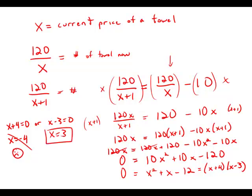That makes sense. And indeed, if the towels cost $3 now, we could buy 40 of them. And if it went up $1 to $4, we could buy 30 of them, 10 fewer. So that in fact works.